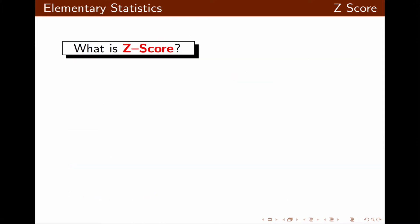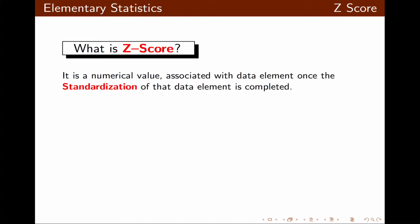What is z-score? It's a numerical value for any data element once the process of standardization is completed. It basically tells us how many standard deviations the data element is below or above the mean.